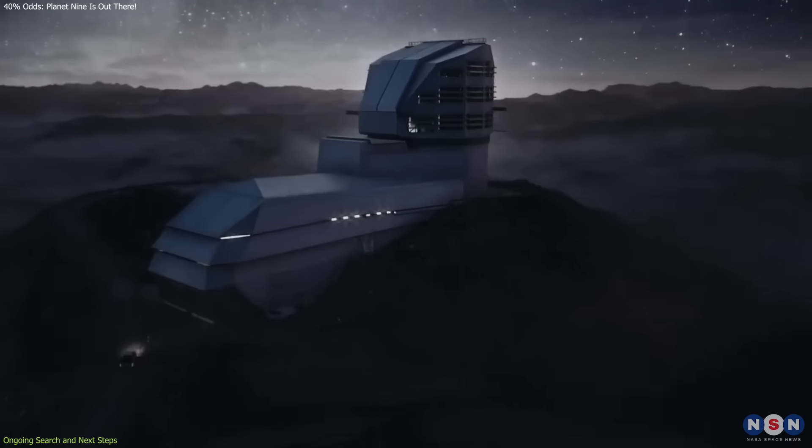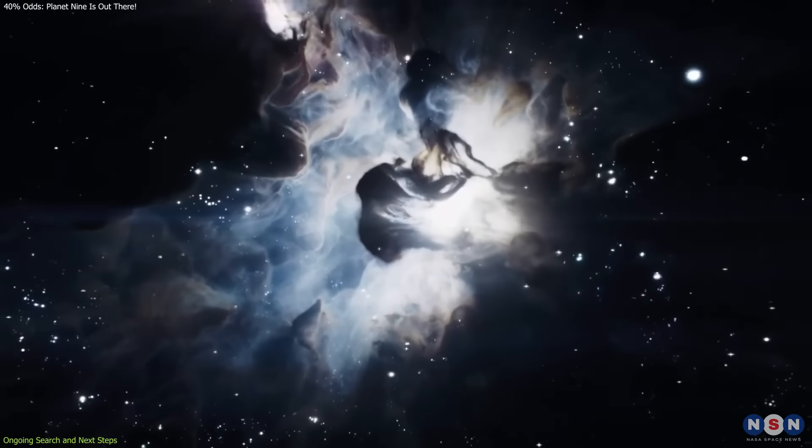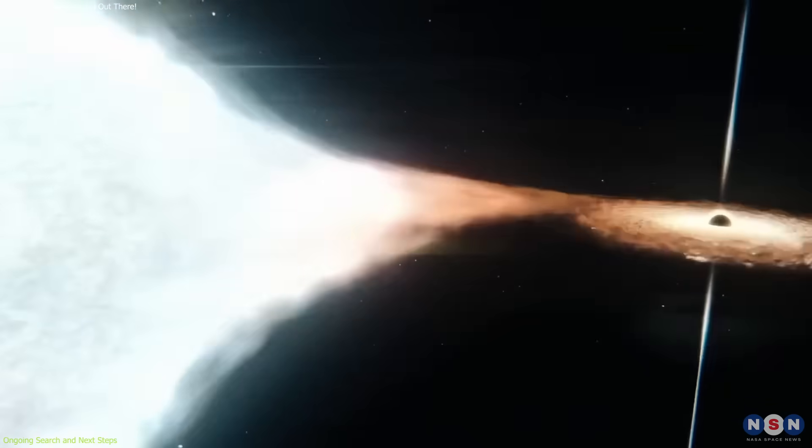This is where the Vera C. Rubin Observatory plays a critical role. Set to begin operations soon, Rubin is designed to repeatedly scan wide areas of the sky and detect faint, moving objects over time.